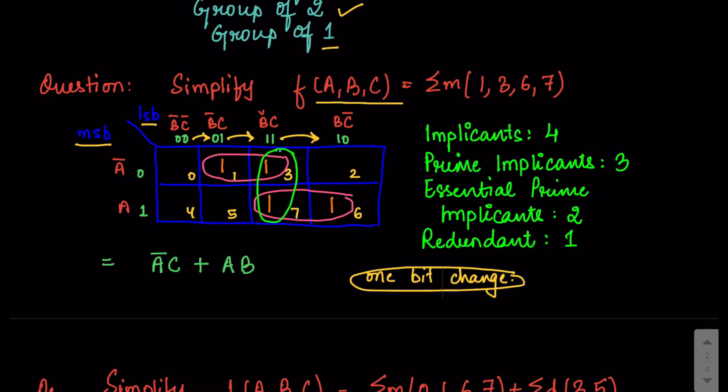So we have 00, then 01 — one bit change — then 11, then 10. This numbering maintains a change of only one bit at a time. We then write down the numbers for each box based on the intersection of the MSB and LSB values. Note that if you change the position of the MSB or LSBs, the numberings for each box will also change — this is very important.